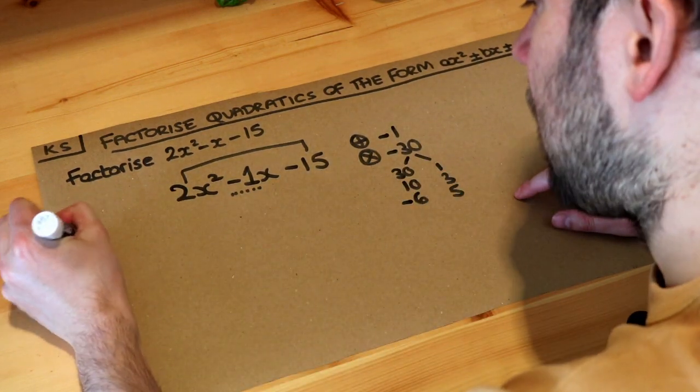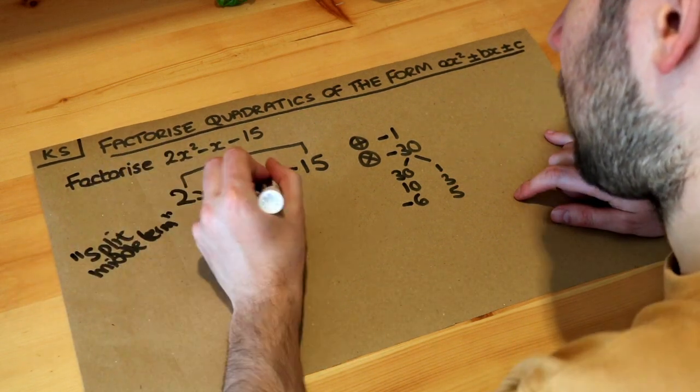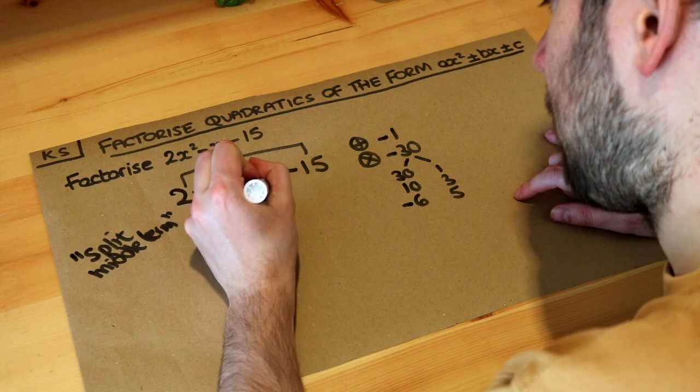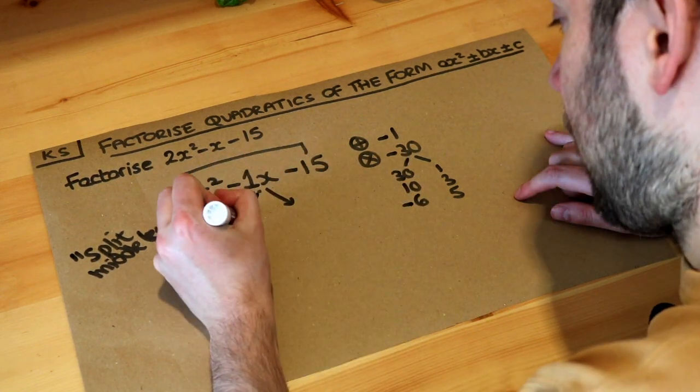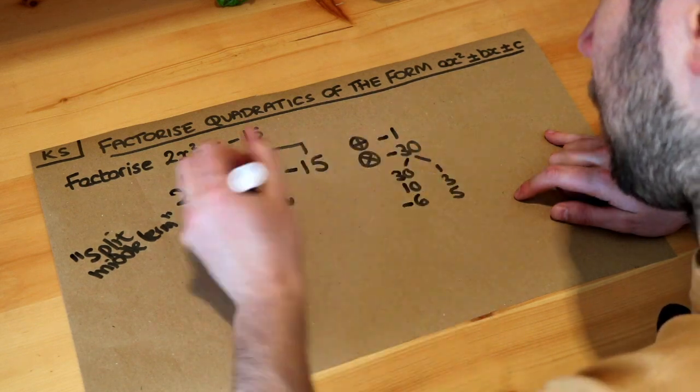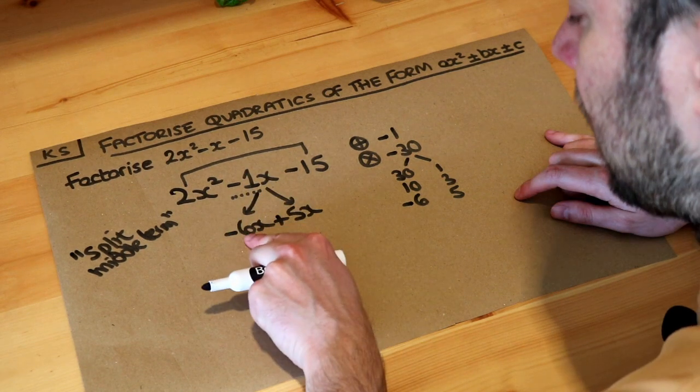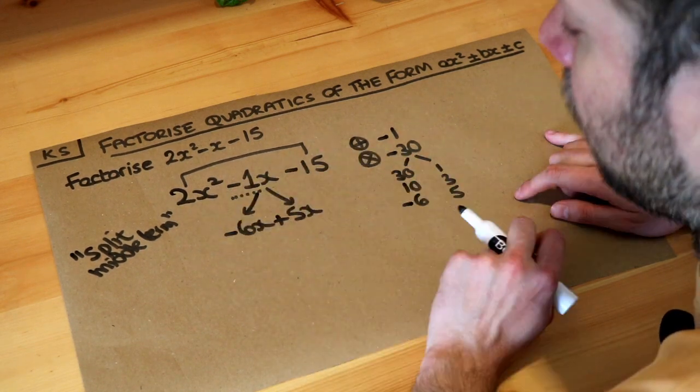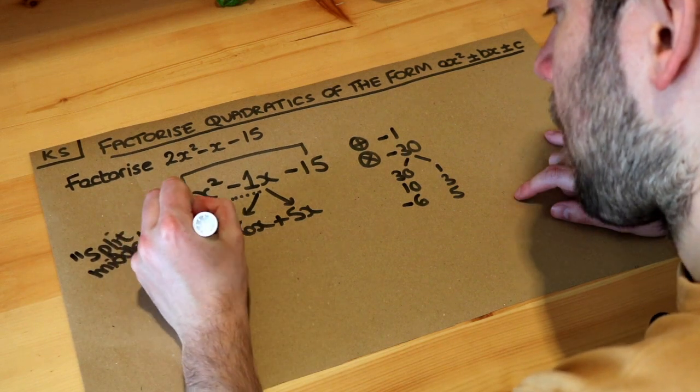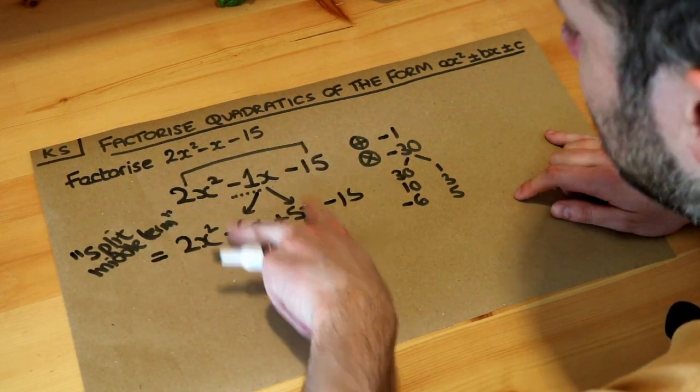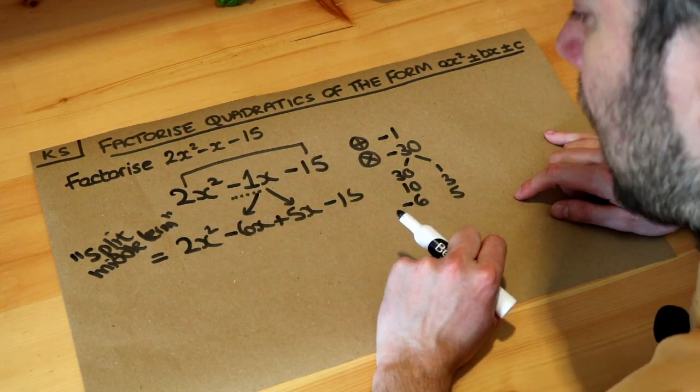And then what we do is we split the middle term. And it's exactly as it's named. We're going to split this middle term here. I'm going to split it using those two numbers we found. So we've got minus 6x and we've got plus 5x. And notice that this does simplify to this. Minus 6x plus 5 lots of x would give you minus 1 lot of x. And just kind of copy what else we have here. So at the moment, this is still exactly the same as this because that would simplify to this.